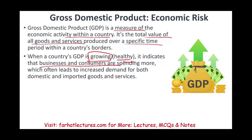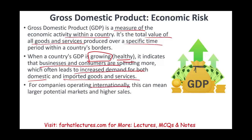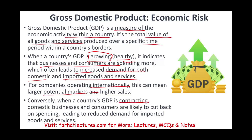Think about US companies selling to Europe — they want Europe doing well so customers can afford to buy their vehicles, computers, and phones. A healthy GDP at your destination often leads to increased demand for both domestic and imported goods and services, meaning a larger potential market and higher sales. The flip side: if GDP is contracting, domestic businesses and consumers are likely to cut back on spending, leading to reduced demand for imported goods and services.